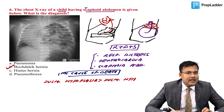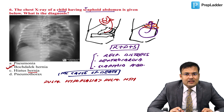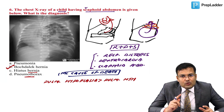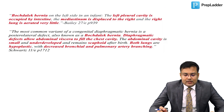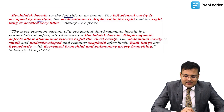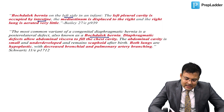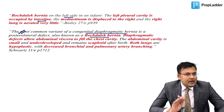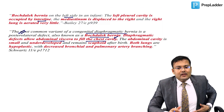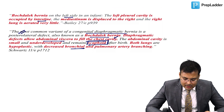Bailey and Schwartz confirm: Bochdalek hernia is generally seen on the left side in infants; the left pleural cavity is occupied by intestine, mediastinum is displaced to the right, and the right lung is minimally aerated. It is the most common variant of congenital diaphragmatic hernia. Because of the diaphragmatic defect, abdominal viscera fill the chest cavity, the abdominal cavity remains scaphoid, and both lungs are hypoplastic with decreased bronchial and pulmonary artery branching.